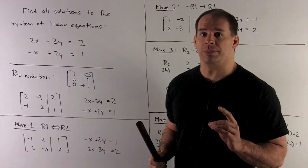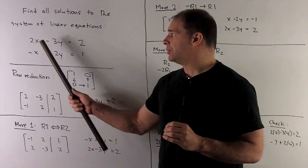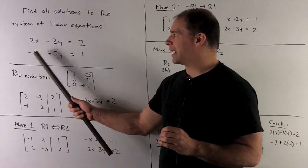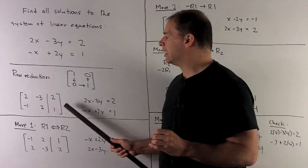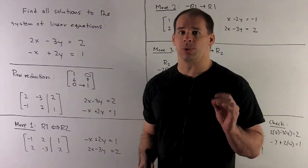So we get our augmented matrix just by peeling off the coefficients. That's how we get the rows. So our rows are going to be 2 minus 3, 2, minus 1, 2, 1. Then I put a bar in where we have equal signs.